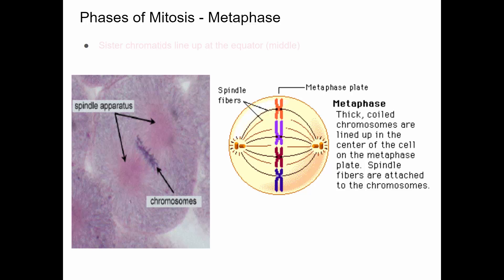After those chromosomes condense, they start to move to the middle of the cell, called the equator of the cell, and they line up single file. The spindle fibers that were forming attach to the chromosomes. In the microscope, you see the dark-stained chromosomes all in the middle of the cell — that's a cell that's in metaphase.